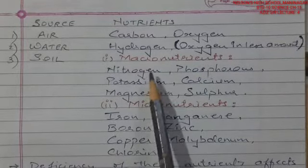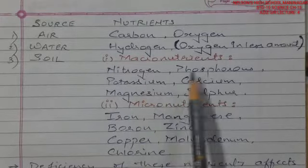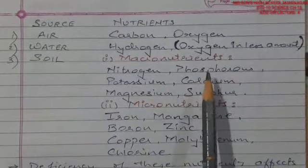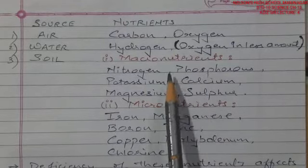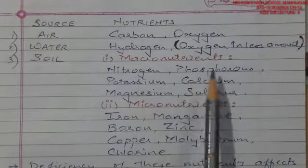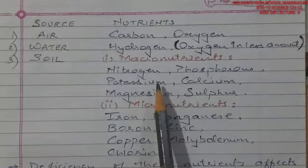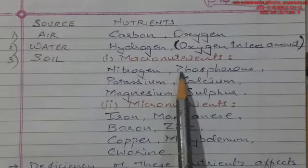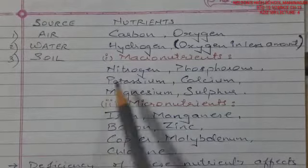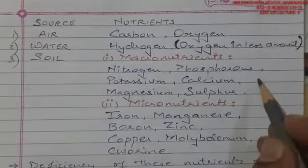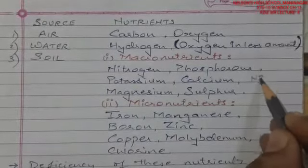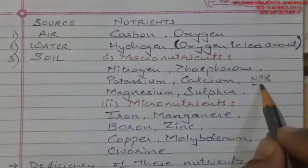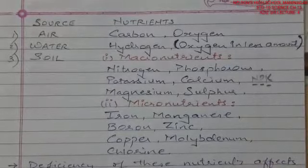The macronutrients from soil include nitrogen, phosphorus, and potassium. These are often referred to as N, P, K — where N is for nitrogen, P is for phosphorus, and K is for potassium.